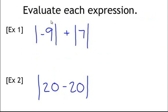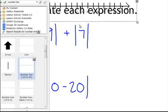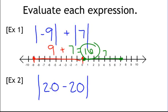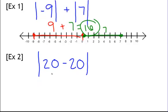Let's evaluate each expression. The absolute value of negative 9 — negative 9 is here on the number line and 0 is here. The distance between negative 9 and 0 is 9, positive 9. Then the absolute value of 7 is 7. So 9 plus 7 gives us 16. Sometimes we have operations within the absolute value — we do order of operations first. So 20 minus 20 equals 0, and the absolute value of 0 is 0 since 0 is 0 away from 0.